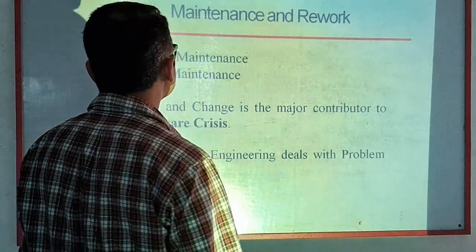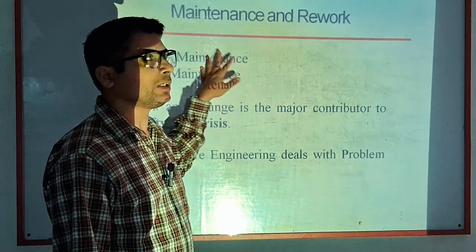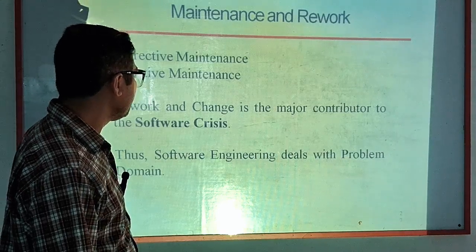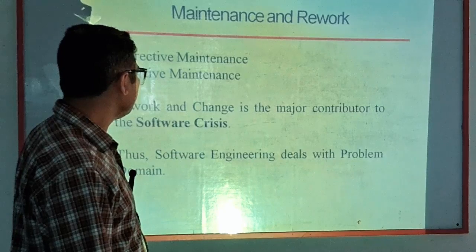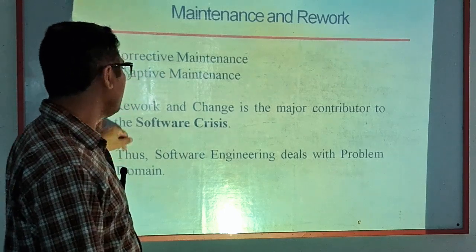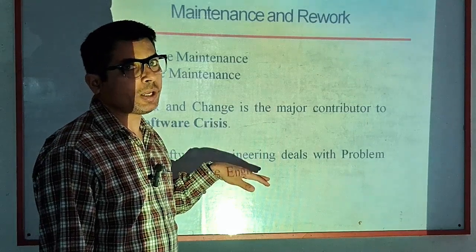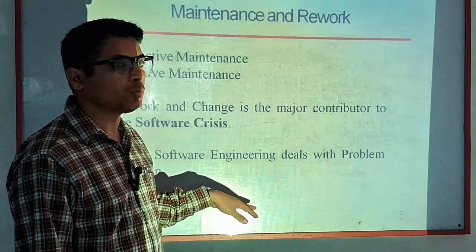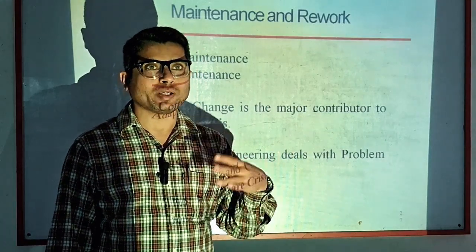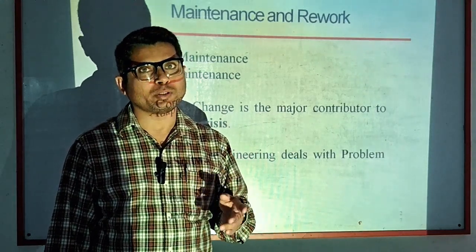Maintenance and rework means improving software that has already been delivered. There are two types: corrective maintenance and adaptive maintenance. Rework and change are major contributors to the software crisis. Software engineering deals with these problems — all these issues can be solved with the help of software engineering, whether developing new software, improving existing software, or performing maintenance work.